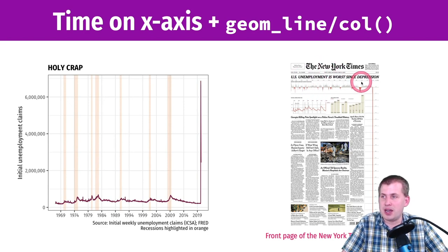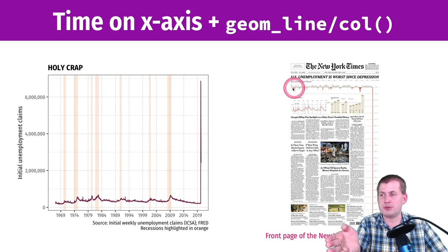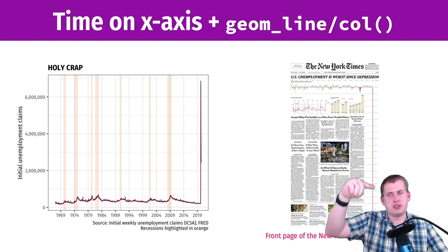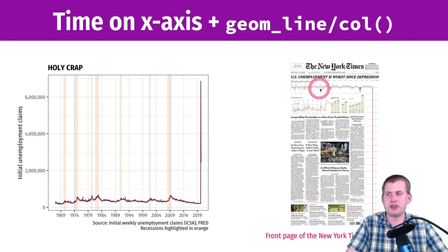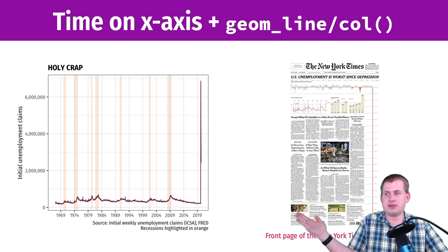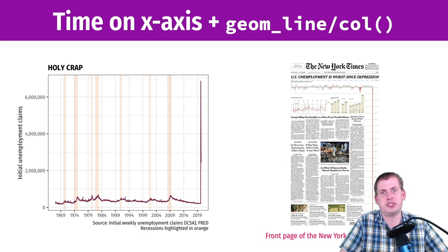The New York Times, on May 9, had on their front page a column chart. Instead of showing the actual numbers of employment claims, this showed the change in weekly unemployment. Sometimes the bars go up when people are getting more jobs, and the bars go down when fewer jobs are added. It's jumping around until you get to the pandemic, and then they had to drop all the way down the whole margin of their page. But fundamentally, these are just time on the x-axis, shown with either geom line or geom col — and that's how you visualize time.